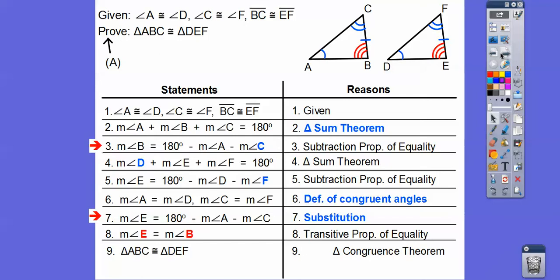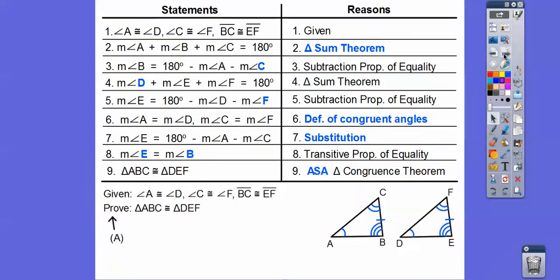Now look at the markings: we have this angle, this side, this angle — the side is now the included side between these two angles. Similarly, over here, the included side, so it goes angle-side-angle. These triangles are congruent. Here are the statements and reasons, and there's the picture.